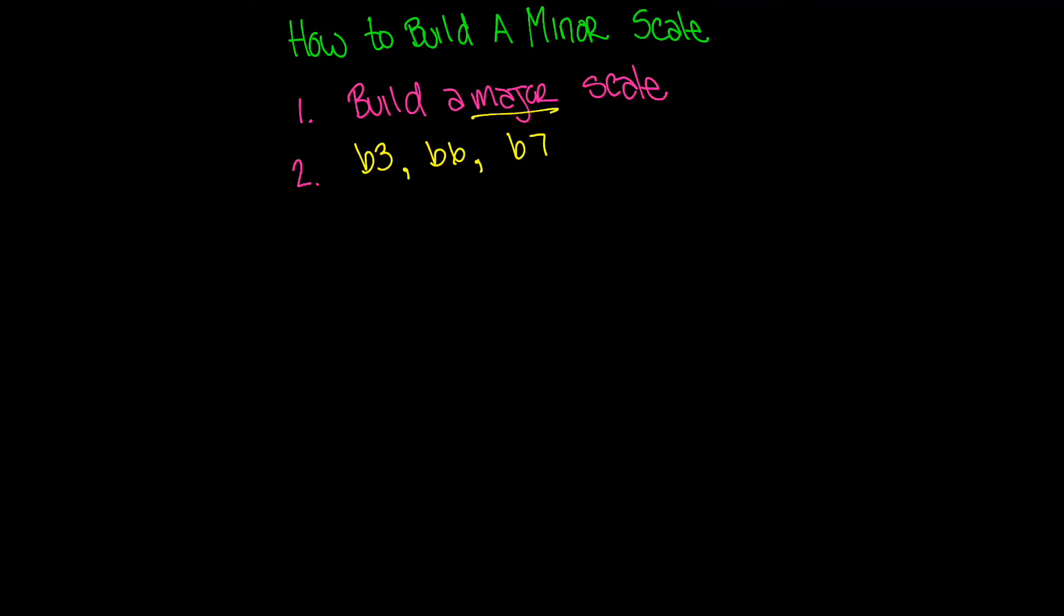Let's get started. I'm going to go ahead and start here with building an A minor scale. Let's go ahead and start with the basic, what I would call the skeleton, right? Just the simple layout: A, B, C, D, E, F, G, back to A.